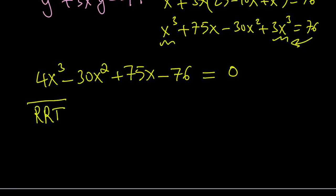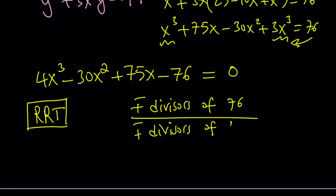What is RRT? It's the Rational Root Theorem. It tells us if there are rational roots, they're going to be of the form of the divisors of the constant term, which is 76, divided by the divisors of the coefficient of x cubed, which is 4. We're going to consider all the divisors of 76 and all the divisors of 4 plus and minus. By dividing all of those in different combinations, we're going to get lots of candidates, and one of them hopefully will work.